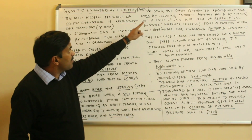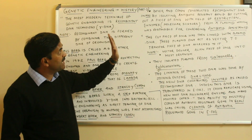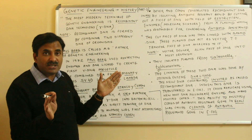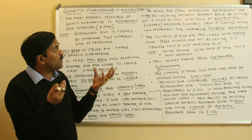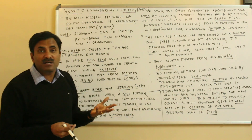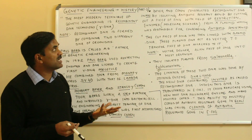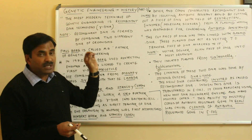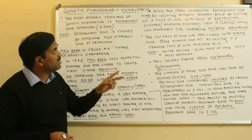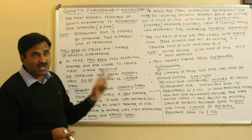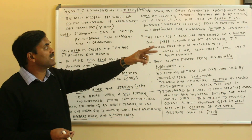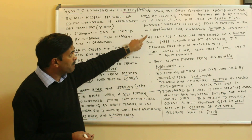Boyer and Cohen constructed the recombinant DNA in 1972 by isolating an antibiotic resistant gene. They cut out a piece of DNA using restriction enzymes — also called molecular scissors — from a plasmid which was responsible for conferring antibiotic resistance.